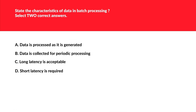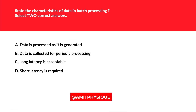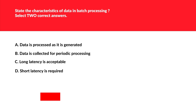The first question is related to characteristics of batch processing. I have marked the keywords and we need to select two answers. The first option is 'data is processed as it is generated' — this is absolutely false. This applies to streaming workload or stream processing, so this is false.